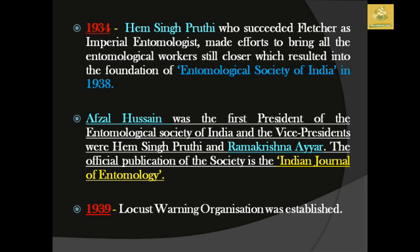In 1934, Hem Singh Pruthi, successor to Fletcher as imperial entomologist, made efforts to bring entomological workers closer together and created the foundation for the Entomological Society of India in 1938. In the same year 1934, M.A.H. Hussain became the first president of the Entomological Society of India, with Hem Singh Pruthi as vice president and Ramakrishna Ayyar also involved. Their official publication was the Indian Journal of Entomology.